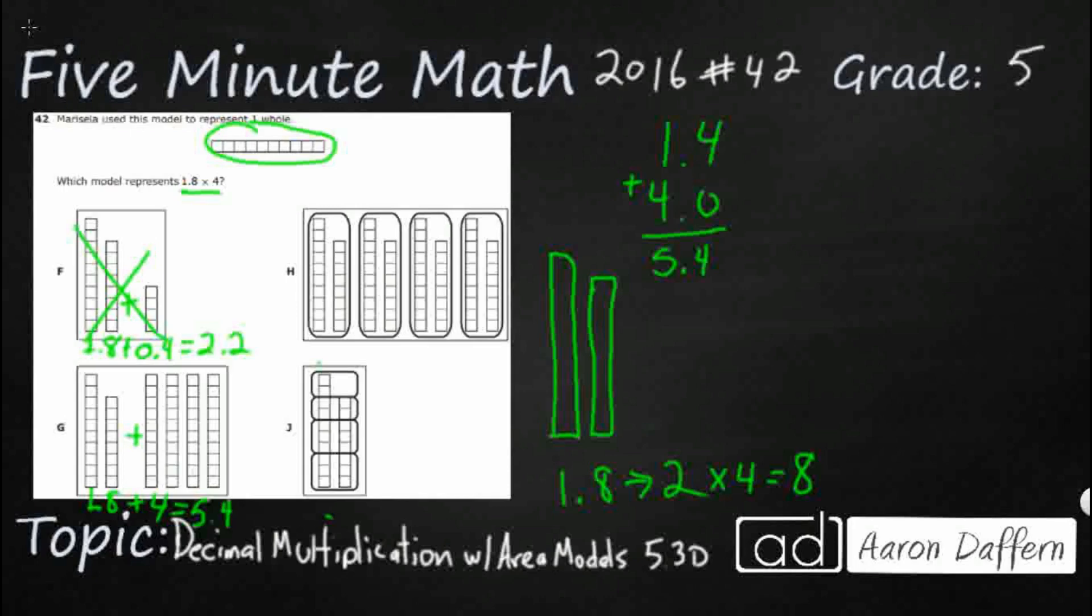Let's look at H. So this is 1.8. And it looks like they're adding another 1.8. They're adding another 1.8. Looks like they've got four sets of 1.8.